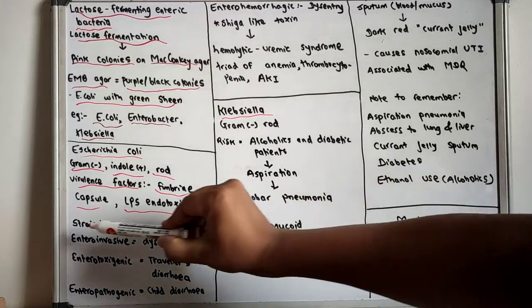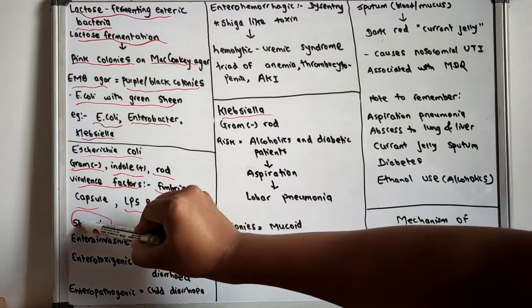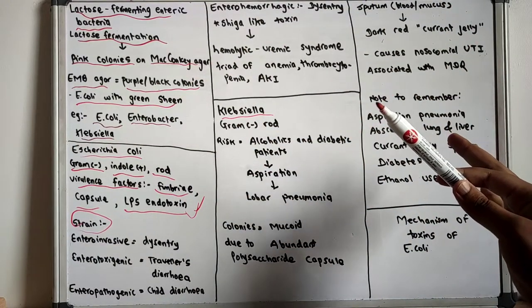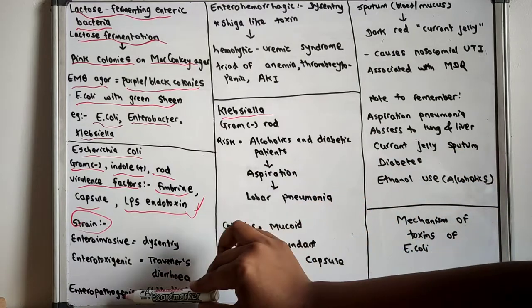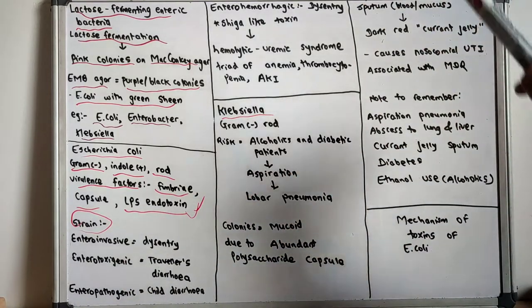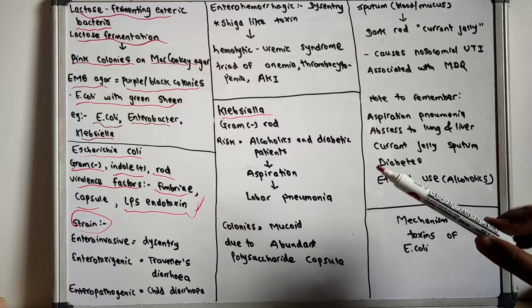Now let us talk about the various strains of E. coli. The various strains are enteroinvasive E. coli, enterotoxigenic E. coli, enteropathogenic E. coli, and enterohemorrhagic E. coli.